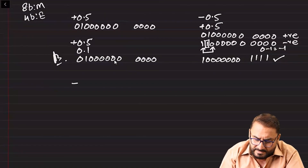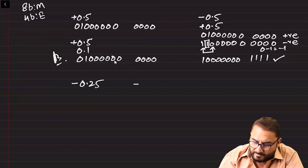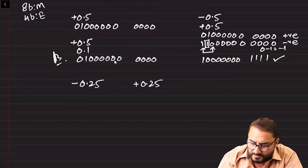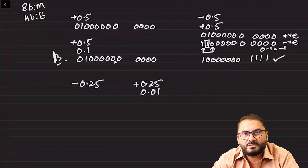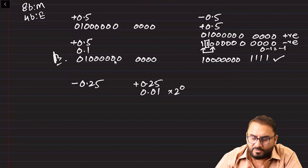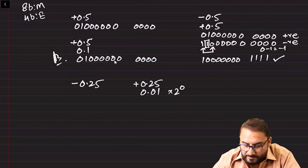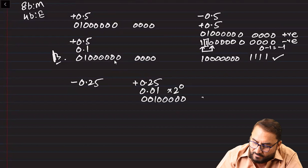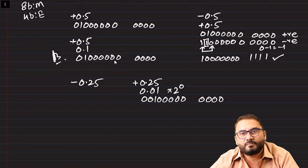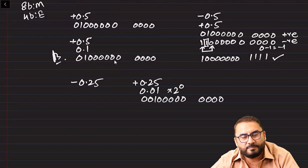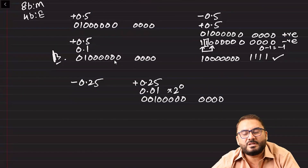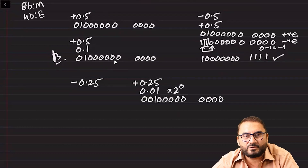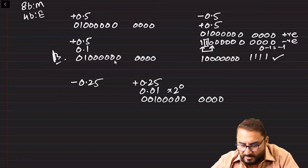Let's solve minus 0.25. First, solve positive 0.25: in binary it is 0.01, so the mantissa is 0 0 1 0 0 0 0 0 and exponent is 0 because we don't move the point. With 8-bit mantissa and 4-bit exponent, you can see immediately that the first two bits are the same — this positive number is non-normalized. Since the original number was negative, we have two options: negate first then normalize, or normalize first then convert to negative. We choose to normalize first, then convert to negative.